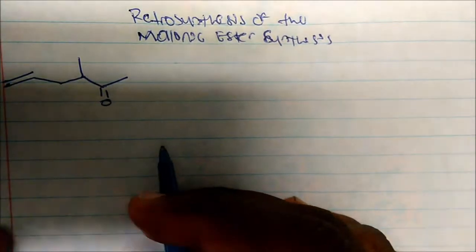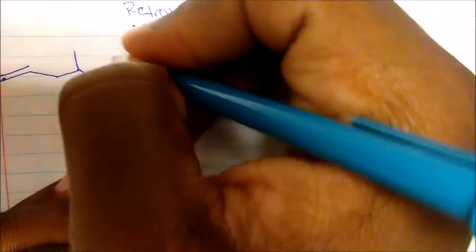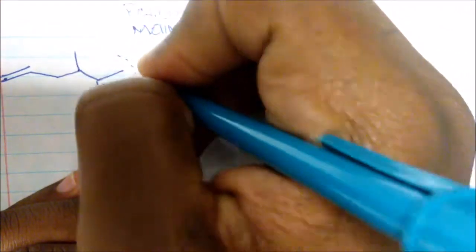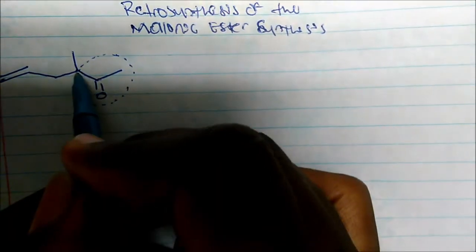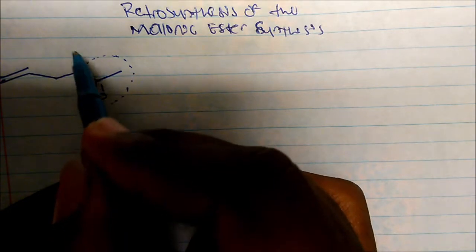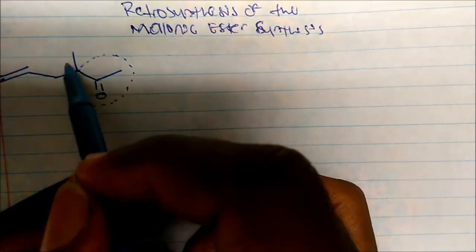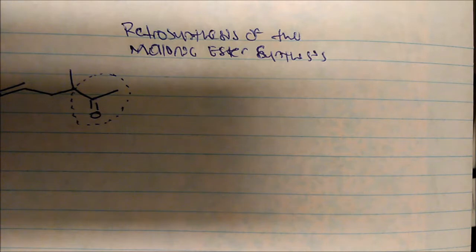On a test you're given a molecule and asked how to make it. The first thing I like to do is identify the acetone synthon and put a circle around it. At the end of each bond, I'm going to attach an alkyl group. There are two different substituents here, so that tells me I need to add two different molecules as SN2 targets using ethyl acetoacetate, because ethyl acetoacetate produces the acetone synthon.